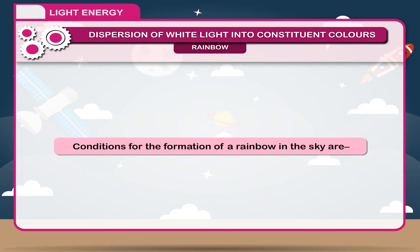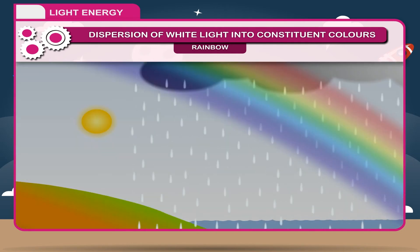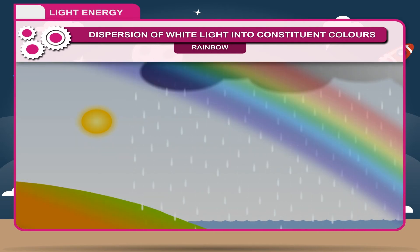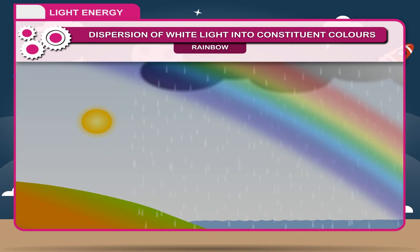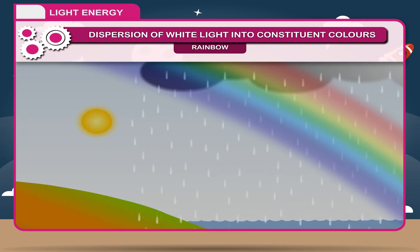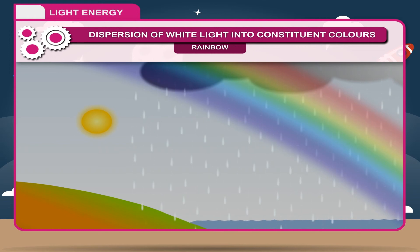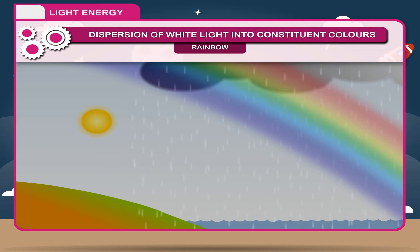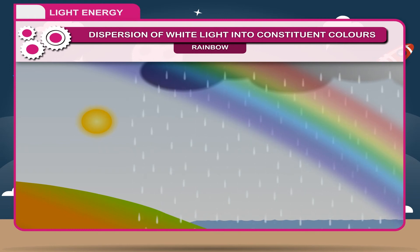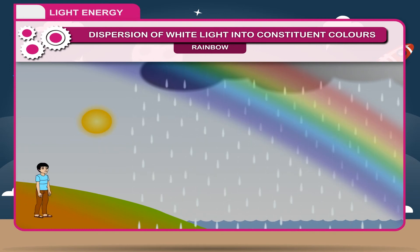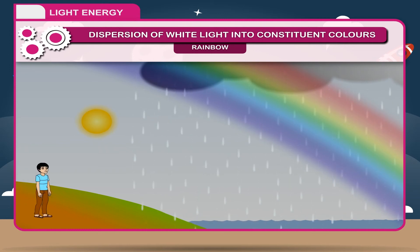Conditions for the formation of a rainbow in the sky: The sun and the rain must be opposite to each other. The sun must be low in the sky. The observer must have his back to the sun.